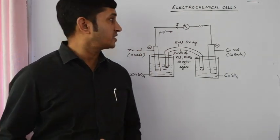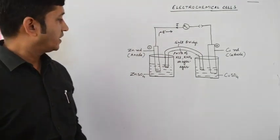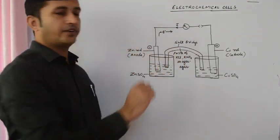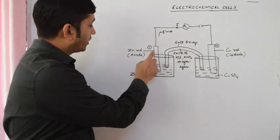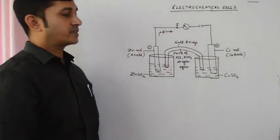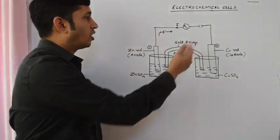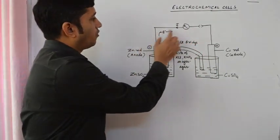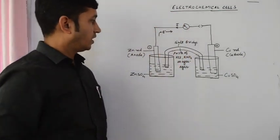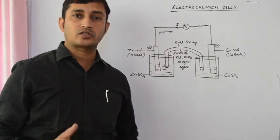Let us take an example of a zinc-copper electrochemical cell. Here we have taken aqueous solutions of zinc sulfate and copper sulfate in two different beakers. A zinc rod is placed in zinc sulfate solution and a copper rod is placed in copper sulfate solution. Both electrodes are connected through a wire and a galvanometer along with a switch.